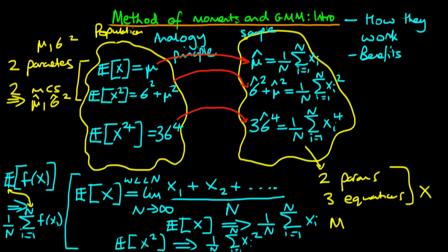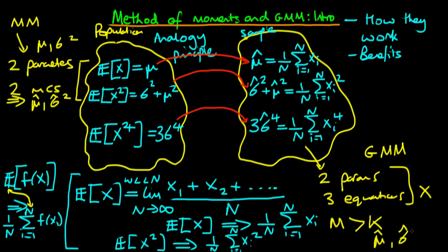The idea is that we have more moment conditions, m, than parameters we're trying to estimate, k. This circumstance defines what is known as GMM, whereas when the number of parameters equals the number of moment conditions — as with two moment conditions and two parameters — this is method of moments estimation. In GMM, we have to come up with a way of getting as close as possible to satisfying each of the three equations by choosing mu hat and sigma hat squared. I'm not going to go into how we do that in this video — just to say that that's how GMM works.